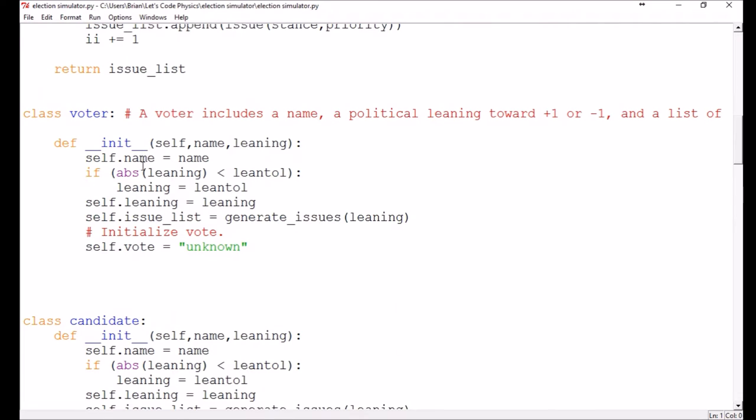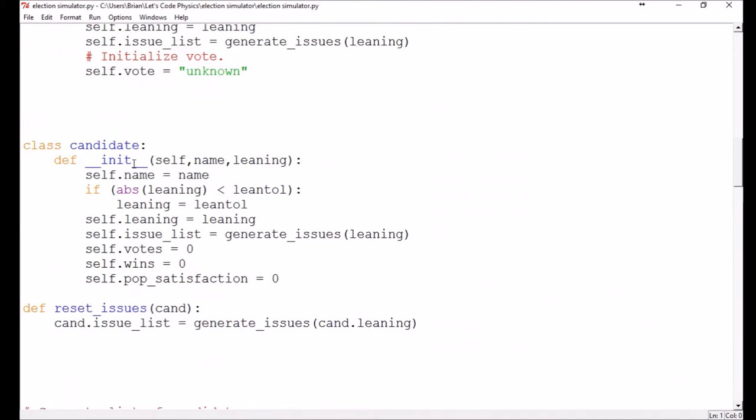Next, we have the voter who has a name and a set of issues generated by the generating subroutine. They also have a vote where we keep record of which candidate they have voted for. The candidate is set up much the same way as the voter in that their stances are assigned based on their leaning. They also have these additional records including the number of votes they've accumulated, the number of times they've won, and the population's satisfaction with them.